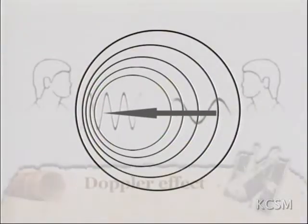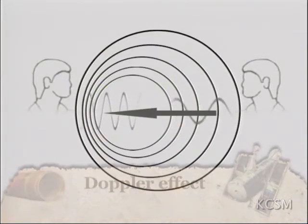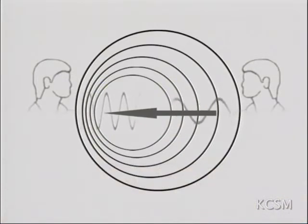Once we take a spectrum of an astronomical object, besides disentangling these patterns and figuring out what the object is made out of, there's also a lot of useful information because of the Doppler effect. The Doppler effect is the apparent change in wavelength of a wave depending on the motion of the source toward or away from an observer.